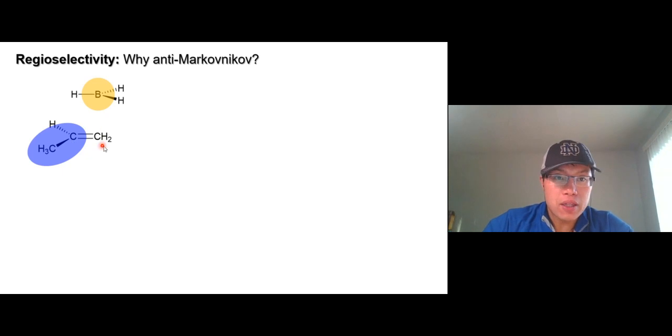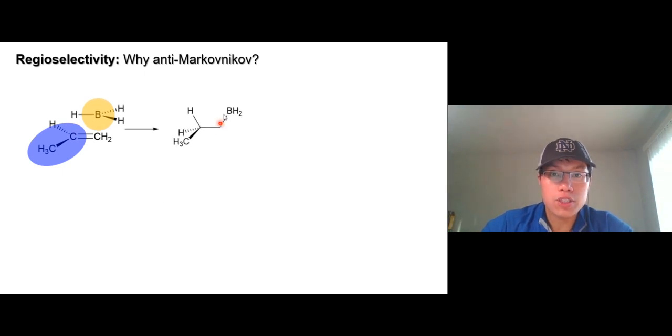So there's an alkene. We have the less substituted carbon and the more substituted carbon. The boron goes on the less substituted one. The hydrogen is going to go on the more substituted one. So it goes like that. So boron goes here.